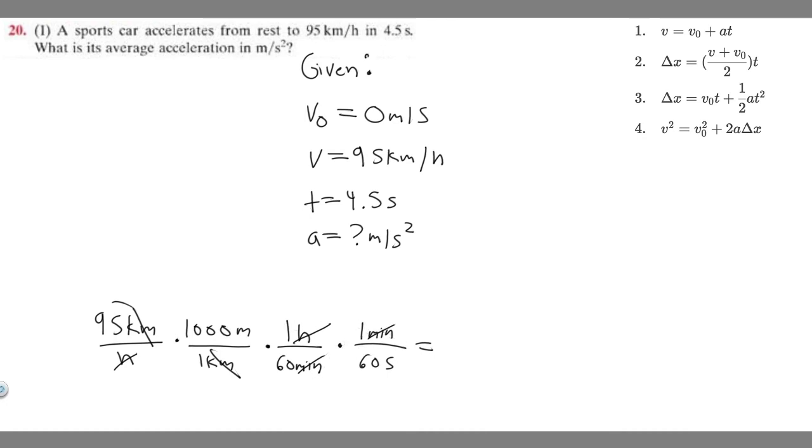So if you go ahead and do that, 95 times 1000, then dividing by 3600, you're going to get 26.3888, and then you can round this to a 9. This is going to be in meters per second, so let's write velocity equals 26.389 meters per second. All we did was change it from kilometers per hour into meters per second.